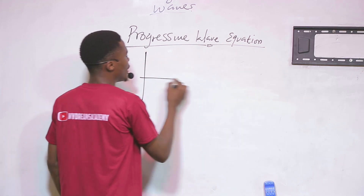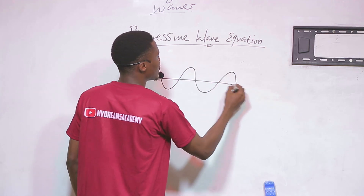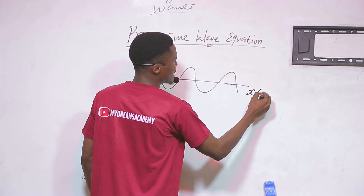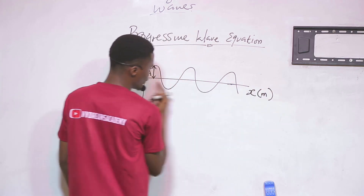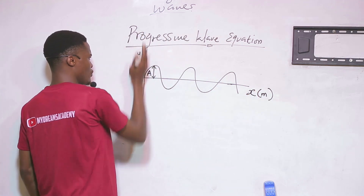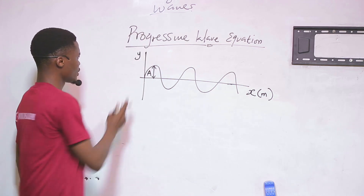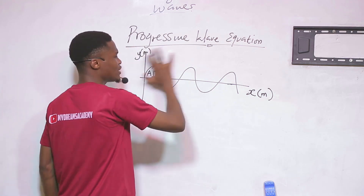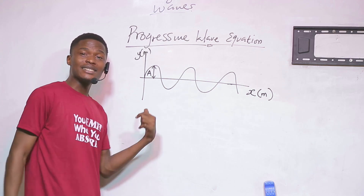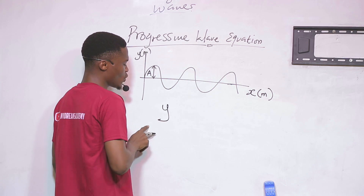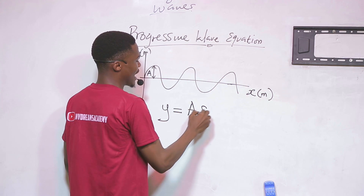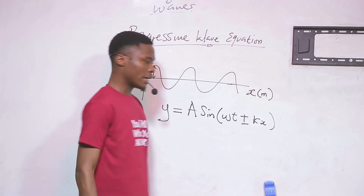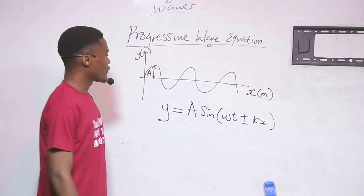Let's use a transverse wave to illustrate the progressive wave equation. Imagine a wave where the vertical axis represents the vertical distance or displacement moved by the wave, and the horizontal axis represents the horizontal distance moved by the wave — this represents the amplitude. We can mathematically model this wave, and the equation of this graph is: y equals A sine of (ωt ± kx).